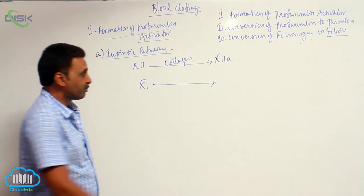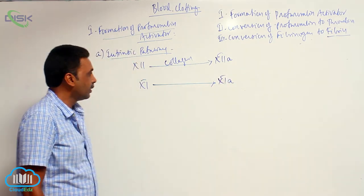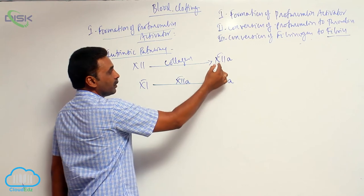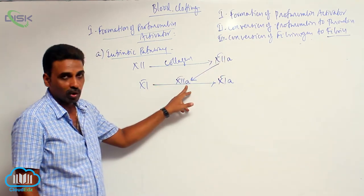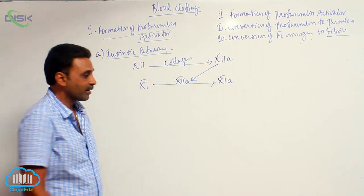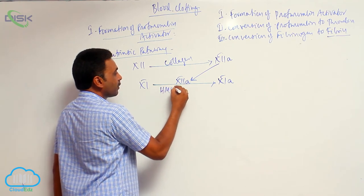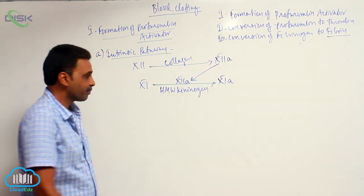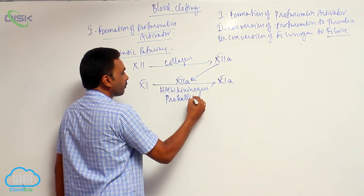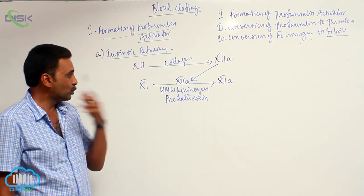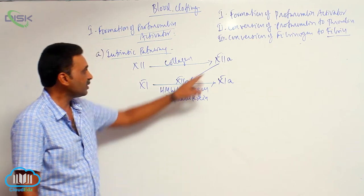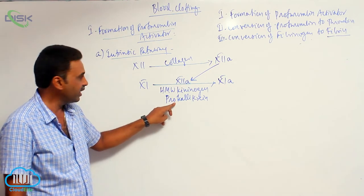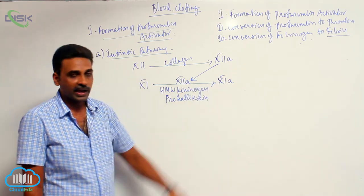The next step is activation of factor number 11. This requires activated factor number 12. The activated factor number 12, in the presence of high molecular weight kininogen and prekallikrein, converts the inactive factor number 11 to activated factor number 11.